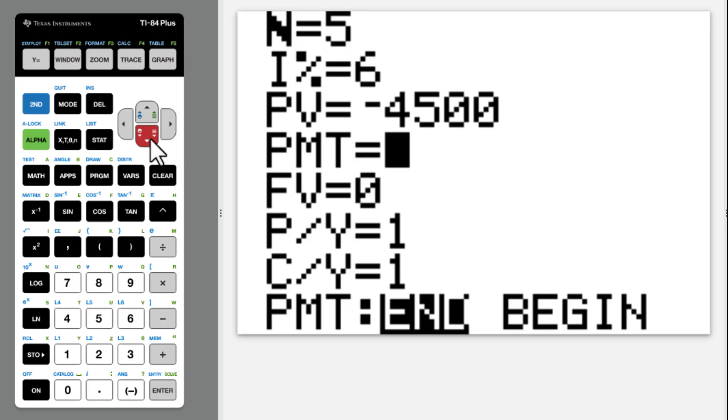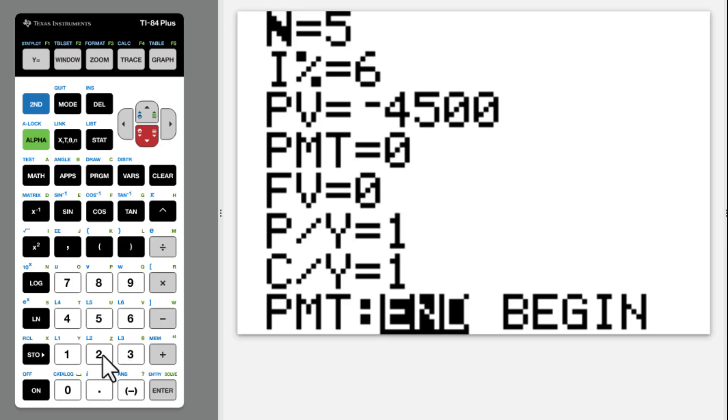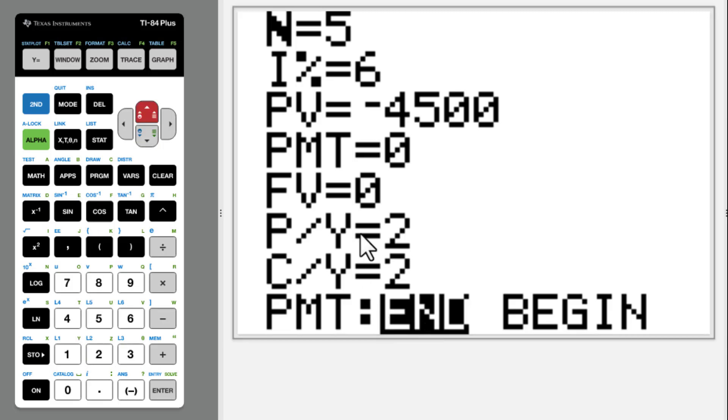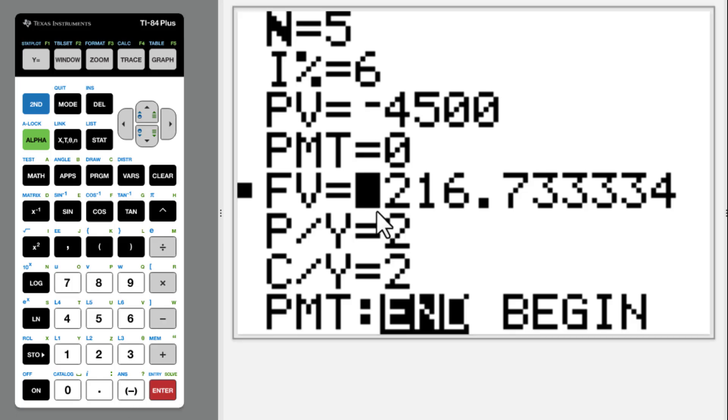Future value we are looking for, so still put 0. Payment per year is 2. Compounding period is 2. We put the cursor back to future value. Alpha, Enter, Solve. We get the same answer.